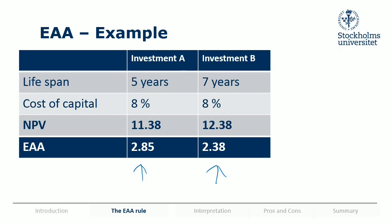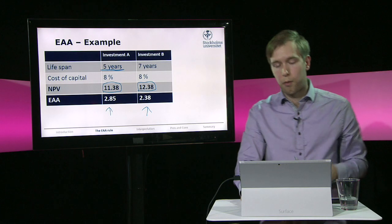If we do this, we find that the equivalent annual annuity of A is 2.85, while that of B is only 2.38. The equivalent annual annuity means you take the NPV and find an annuity — a cash flow of the same size every year — which is equivalent in present value to that NPV. So instead of receiving an NPV of 11.38, we would be equally happy to receive 2.85 every year for five years. Since A can be repeated, we can get 2.85 every year for a longer period. A gives 2.85 every year, B gives 2.38 every year, so A is the better investment.